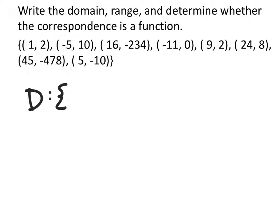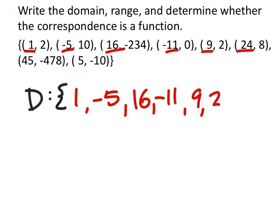So let's look at these x values. We've got 1, negative 5, 16, and we're just listing these out, negative 11, 9, 24, should have written smaller, 45, and this one is a positive 5. And then we close it. That's not too fancy. Oh, there we go.